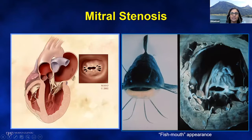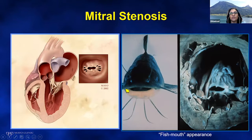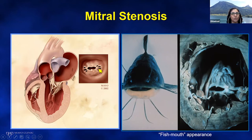Mitral stenosis — this is called the fish mouth appearance because rheumatic mitral stenosis causes commissural fusion, as depicted by this fish mouth. Here again we see commissural fusion causing this fish mouth deformity, and here's a schematic showing that as well, where the commissures are fused causing the opening of the valve to look like a fish mouth.